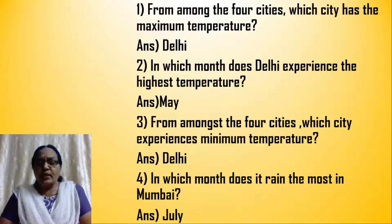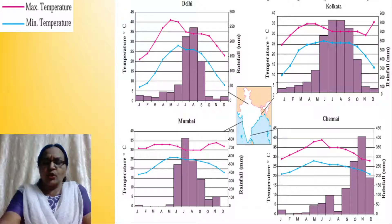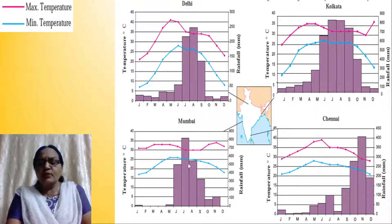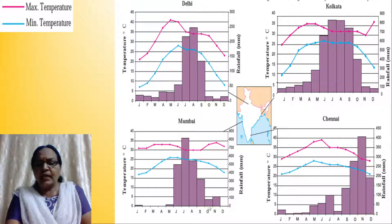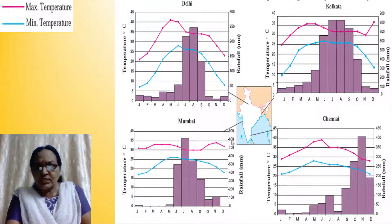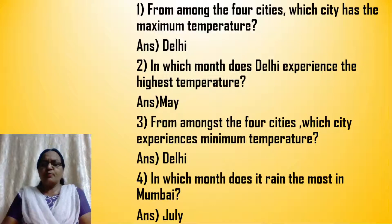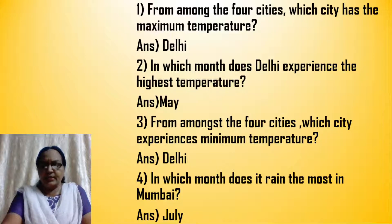In which month does it rain the most in Mumbai? Come to Mumbai — the histogram shows the rainfall in millimeters. We have rainfall in June, July, August, September, a little bit in October, then some in November. In which month is the rainfall more? It is in July — more than 800 millimeters. So in which month does it rain the most in Mumbai? It is in the month of July.